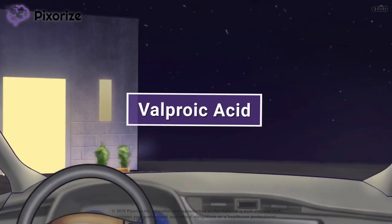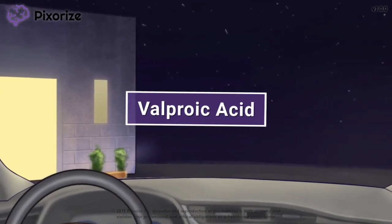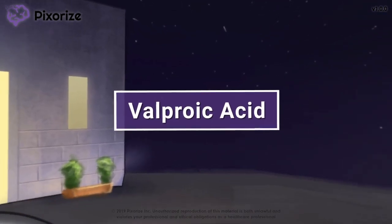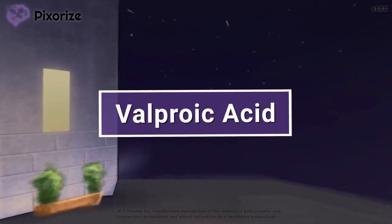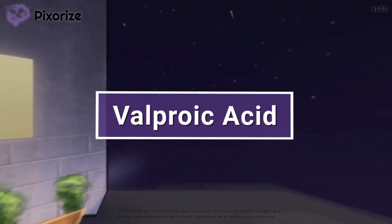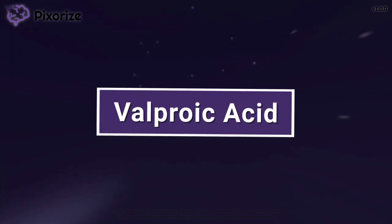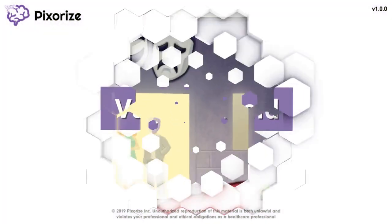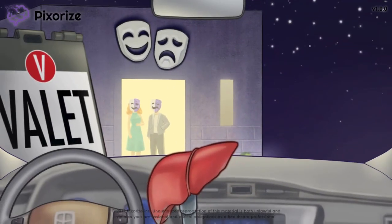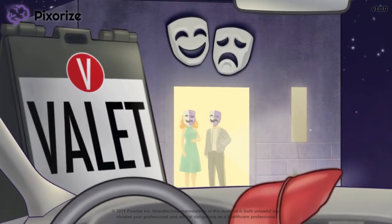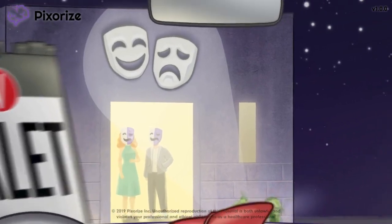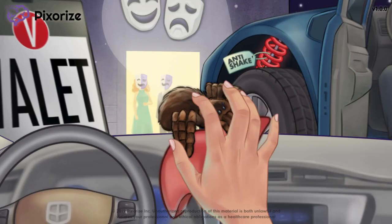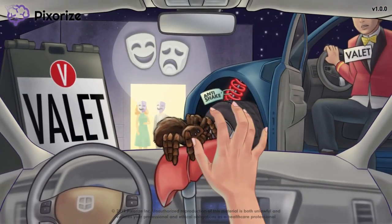Valproic acid, also referred to as valproate or its brand name Depakote, is a drug used as an anticonvulsant for the treatment of seizures as well as a mood stabilizer used to treat bipolar disorder. In this video, I'll share with you my visual mnemonic to help you learn all the information about valproic acid so you'll be ready for test day.